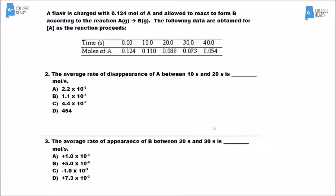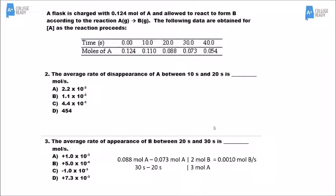For number three, we take the same data table and look at 20 seconds and 30 seconds. We figure out how much the change in A is, then go back to the original stoichiometry from the equation in number one to figure out how much B gets made when that much A disappears from 20 to 30 seconds. The answer there would be A.